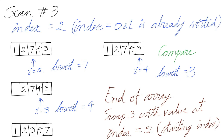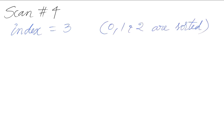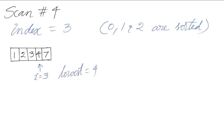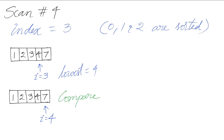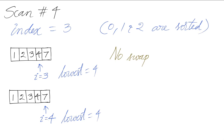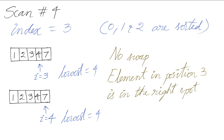After the swap we have 1, 2, 3, 4, 7. At the beginning of scan 4, we will start with index 3 because positions 0, 1, and 2 are sorted. The index starts here and the lowest we have seen is 4. We compare with the next element — 7 is not less than 4, so the lowest remains at 4. There is no swap in this particular scan. The element at position 3 is in the correct spot, so the entire array is now sorted.